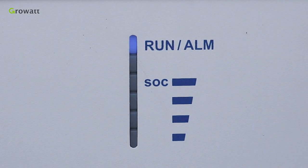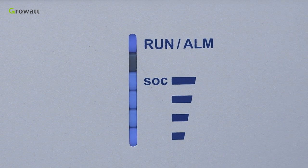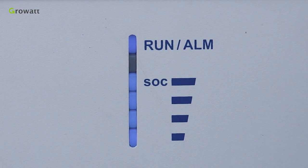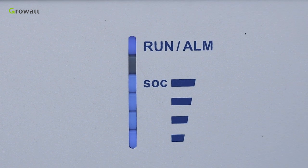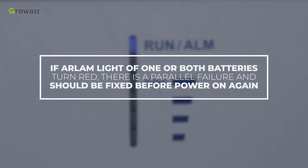If the light of the RON on both batteries flicker for 5 times, it means that two battery systems power on successfully and the communication between two batteries is well. If alarm light of the battery turns red, which means that there is parallel failure and should be fixed before power on again.